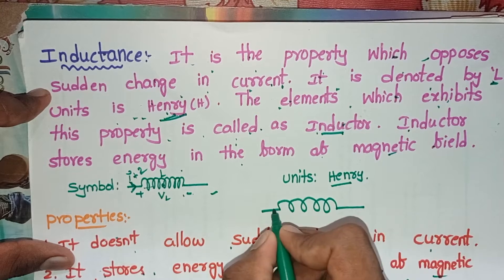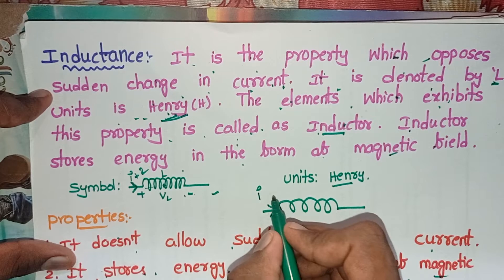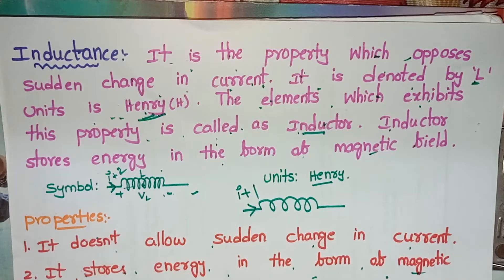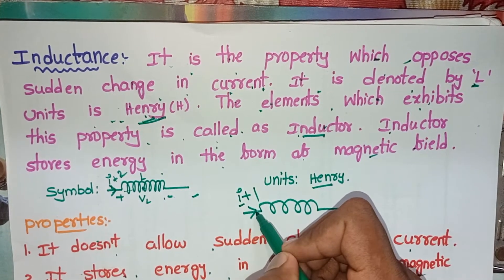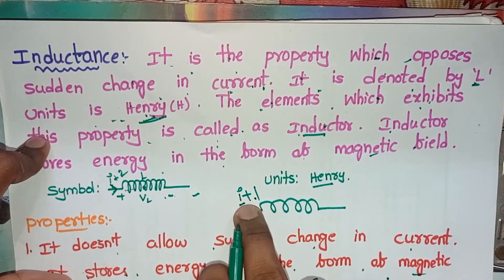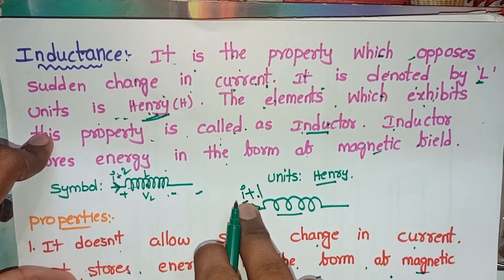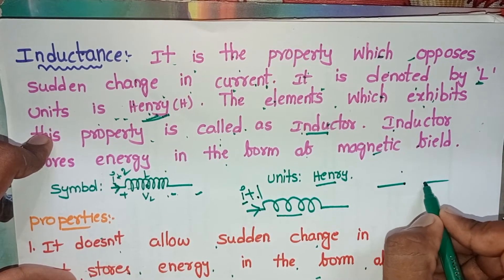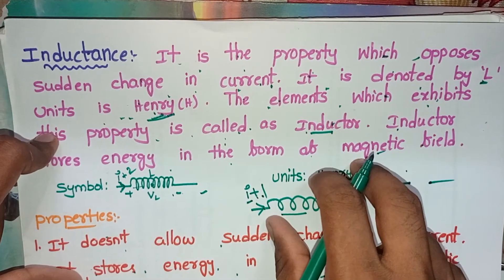Suppose this is the inductor and the current flowing through it is I. When I suddenly changes to I plus one, there is a change in current. Whenever the current suddenly changes, the inductor does not allow that sudden change of current. When that happens, the inductor acts as a short circuit.